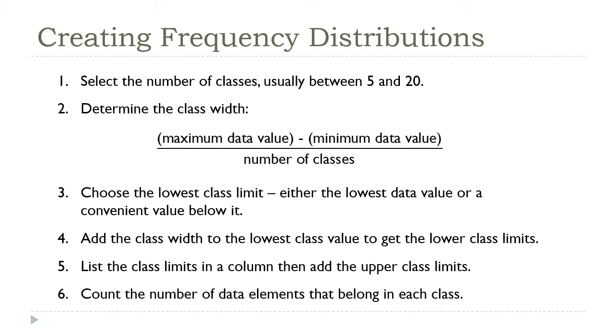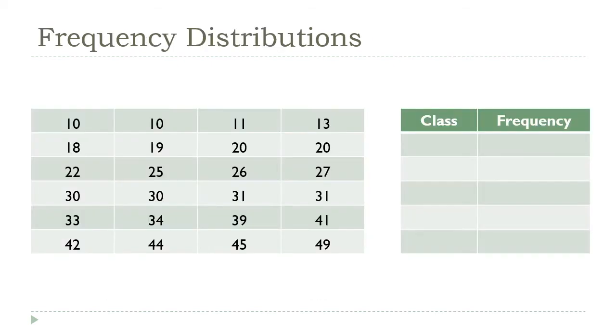All right, so once you've got those classes, then just like we saw on the previous example, it's just a question of counting the number of data values that fall into each one. So there was a lot going on there. Let's see how this works. I'm going to create a frequency distribution, and I'm going to do this with five classes. So if you like, you can pause the presentation now and work this out yourself, then come back and see how I do it.